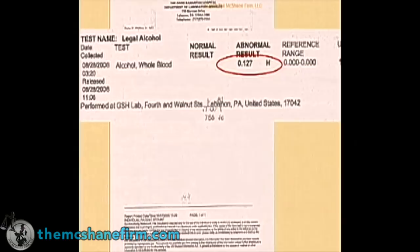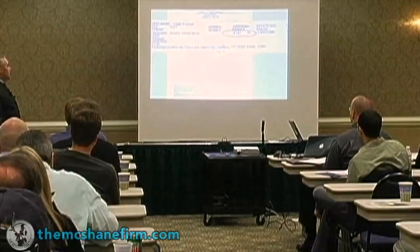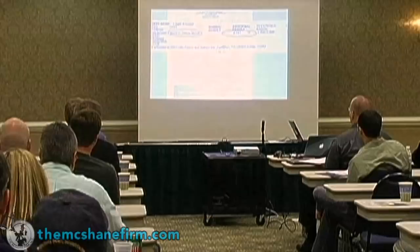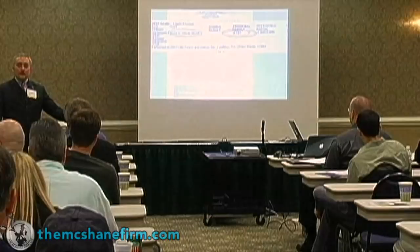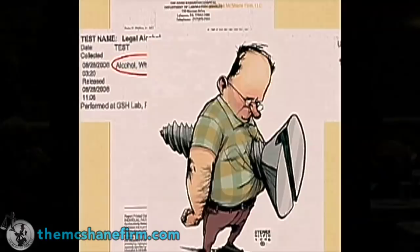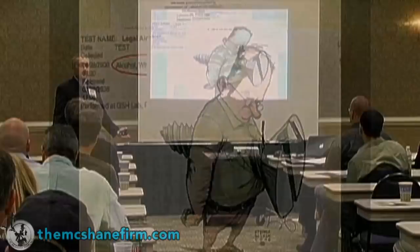...it says 0.127, an abnormal result for alcohol. But if you notice, it says 'whole blood' — yet it is not an expression of whole blood. And the reason why is not just because you understand the process now that it's not an expression of whole blood, but unfortunately when you first see it you're upset — you sit there and go, 'Oh my God, he's screwed.'